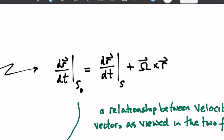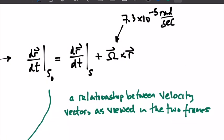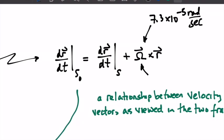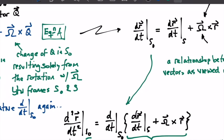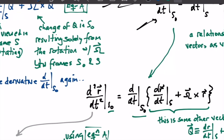If this is a situation where the non-inertial frame is us observers on the surface of the Earth trying to do physics, this angular velocity is 7.3 times 10 to the minus 5 radians per second — that's the angular velocity of the Earth — and its direction is given by the right-hand rule. This gives a relationship between the two velocity vectors as viewed in the two different frames. To proceed to calculate what forces are, we obviously need to know what accelerations are, so we're going to take this relationship between the velocities and take another time derivative of it.